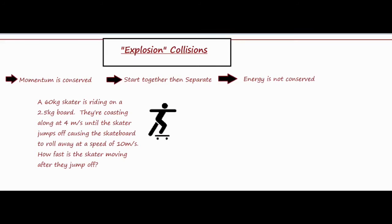In this video I'm going to be talking about explosion collisions and how to work out a calculation to solve for an unknown velocity. First of all, we want to make sure we're familiar with all the concepts with momentum and explosion collisions. We're going to take a look at how momentum is conserved and how the momentum before the collision equals the momentum after the collision in order to solve for an unknown variable.